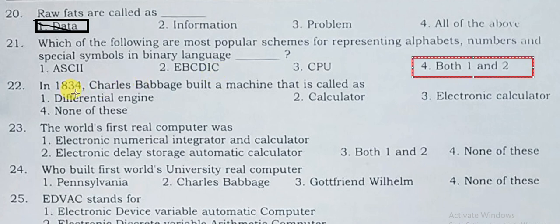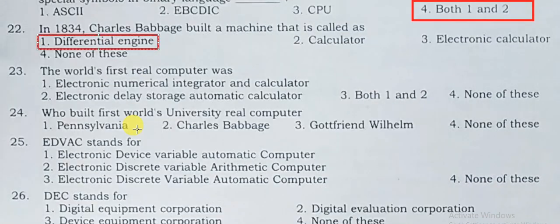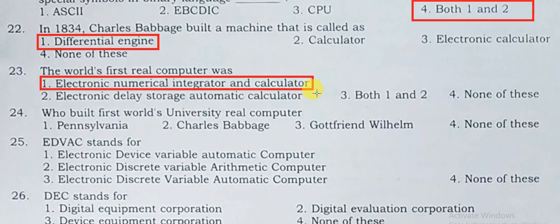In 1834, Charles Babbage built a machine called the Differential Engine. The world's first real computer is ENIAC — Electronic Numerical Integrator and Calculator.